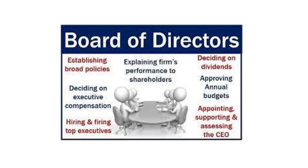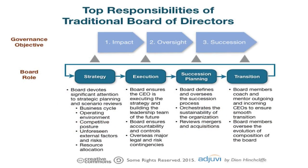Looking at some graphic representations of the board around the table: they'll be looking at broad policies, explaining and reporting back performance to shareholders, decisions around dividends, budgets, appointing management, and how to remunerate executive managers. Another illustration shows four components of strategy, execution, succession planning and transition — with the governance objective around impact, oversight, and ensuring ongoing succession.